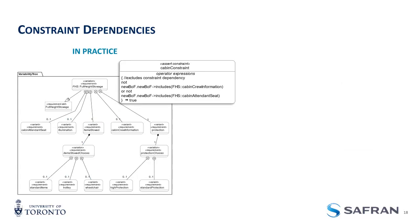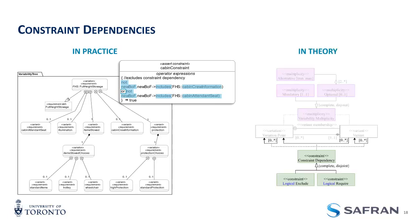For constraints: if I select a cabin attendant seat, I may not want to also select cabin crew information — I don't want those two to interact on my full height stowage. I need to represent the relationship that selecting one means I cannot select the other. This is an excludes relationship. You also have a requires relationship, which acts in the same way as another type of constraint.